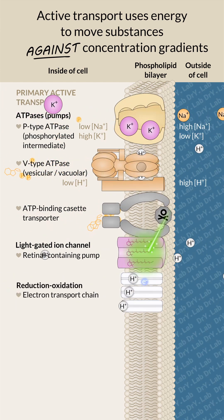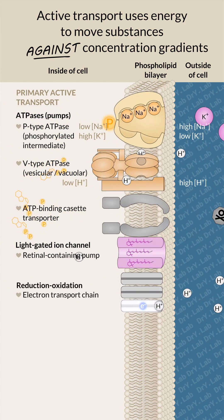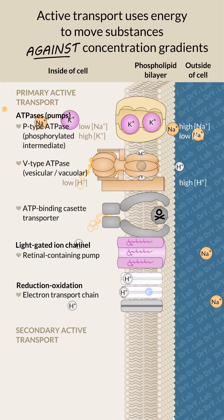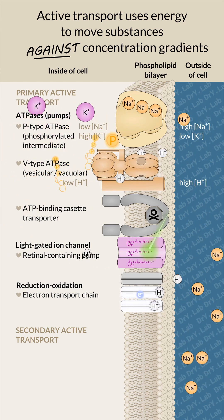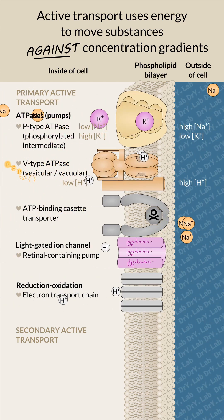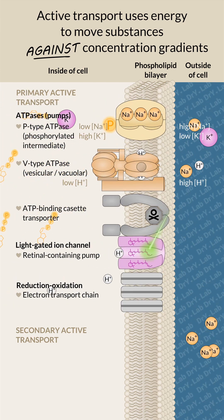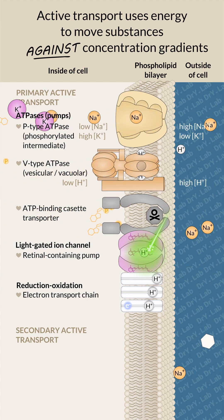The electron transport chain uses energy released from redox reactions. Secondary active transport uses the solute gradients established by primary active transport. For example, the sodium gradient is high outside and low inside the cell.